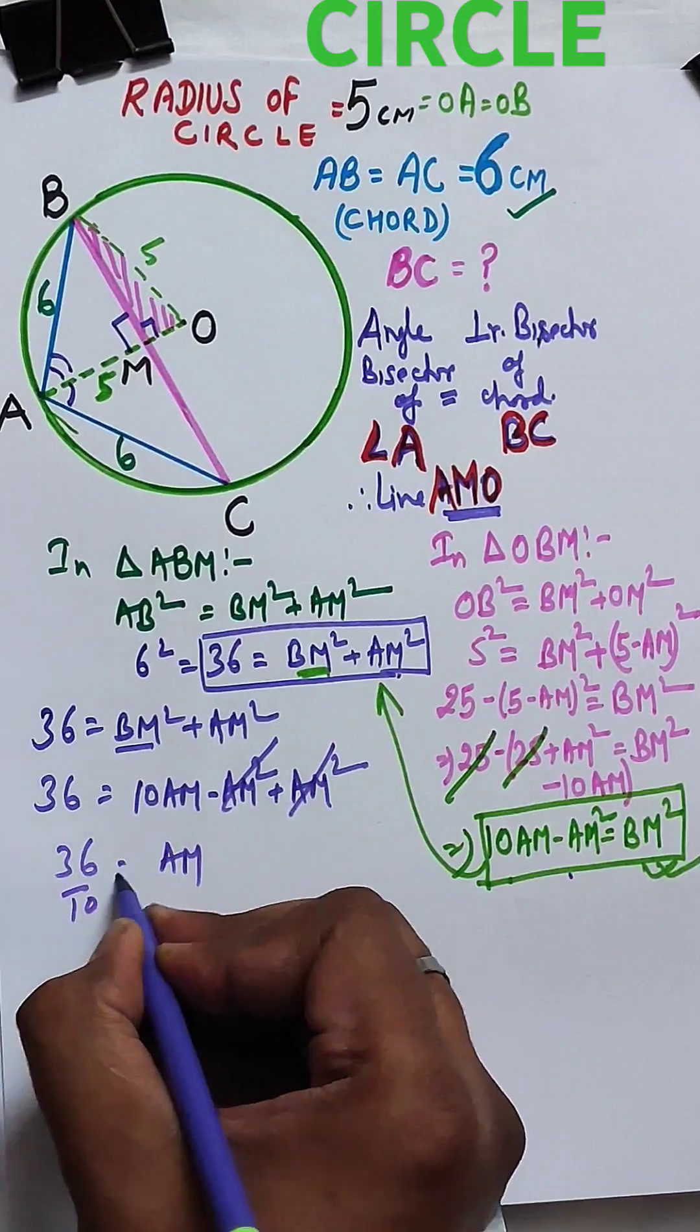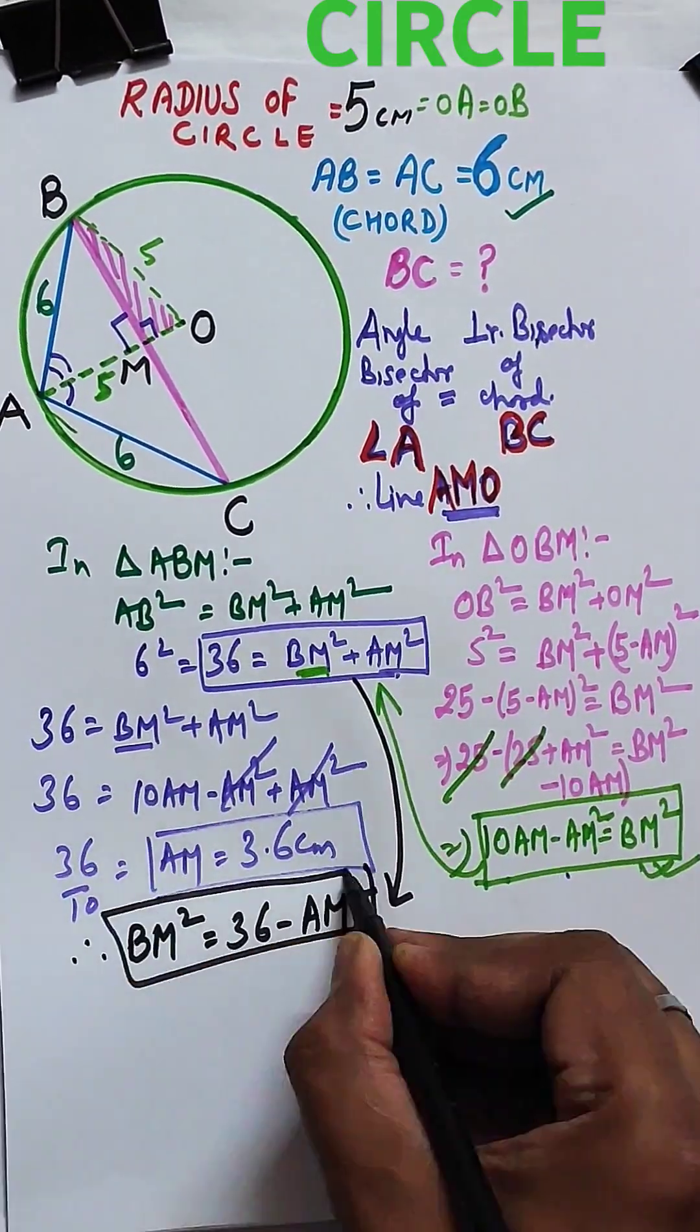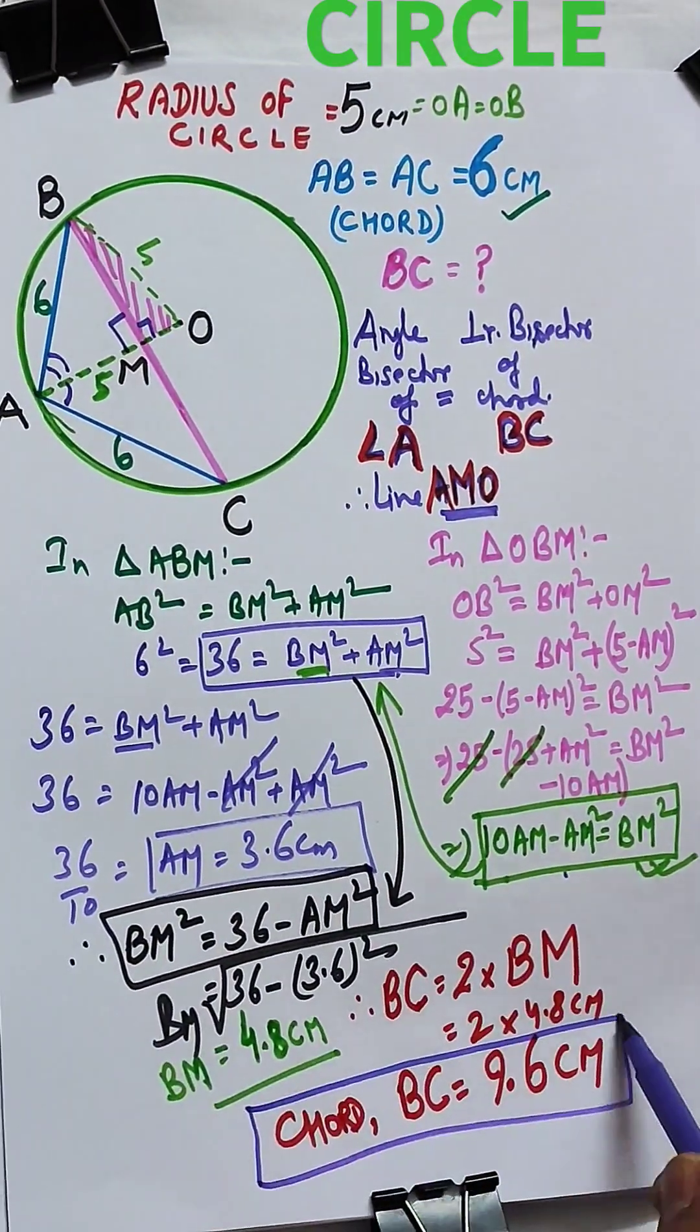Now, putting this value, we get BM as 4.8 cm, so chord BC equals 9.6 cm.